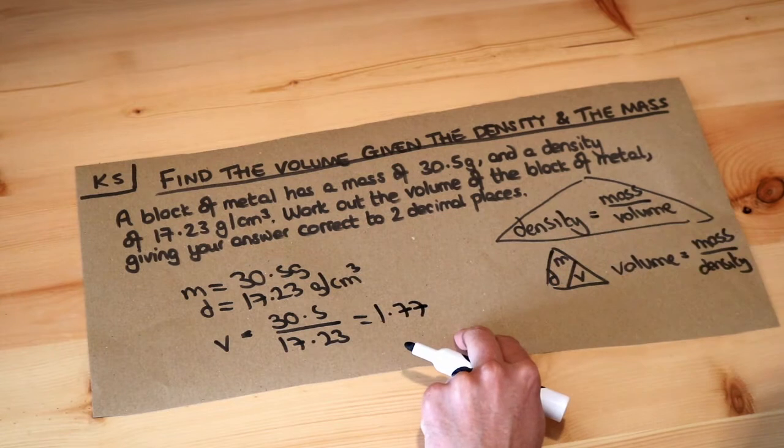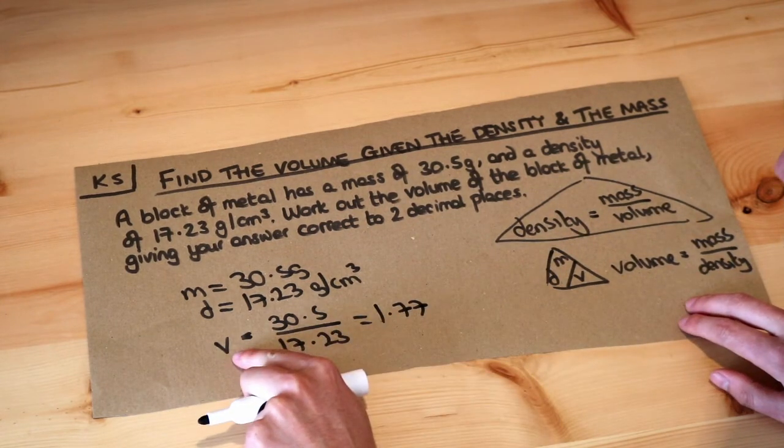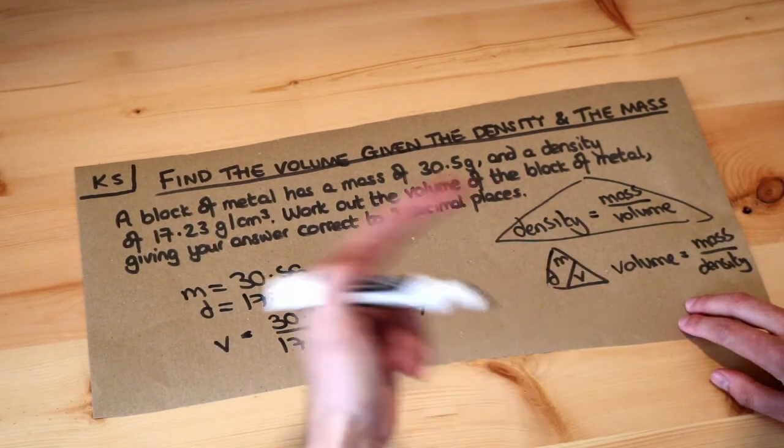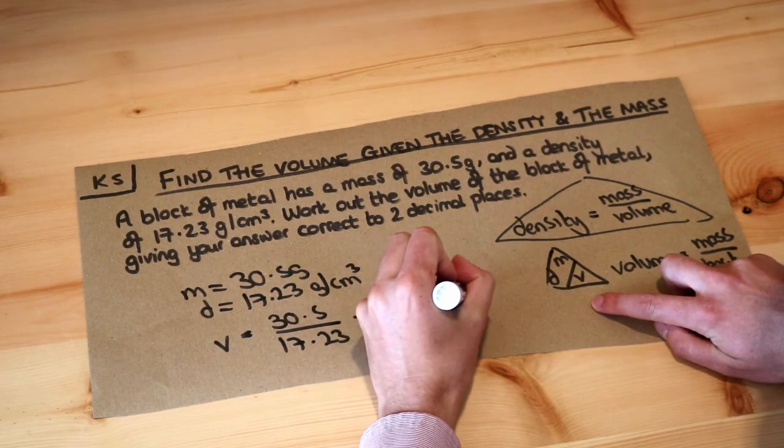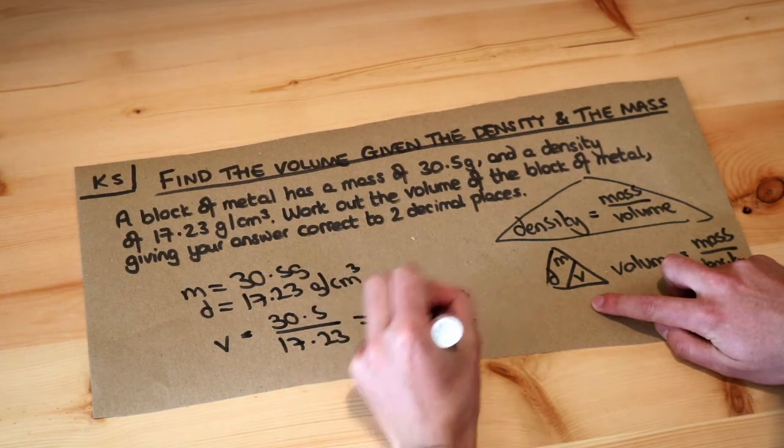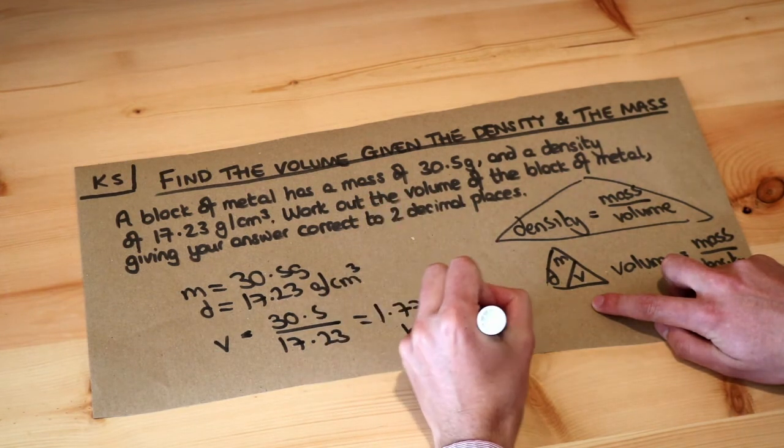And what's the unit? Well, the unit of volume is usually centimeters cubed or meters cubed. We can see it's per centimeters cubed, so the unit here is going to be centimeters cubed. And that was to two decimal places as requested.